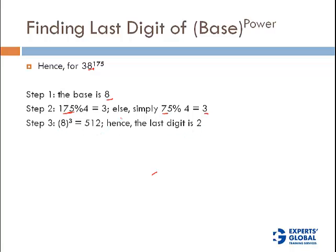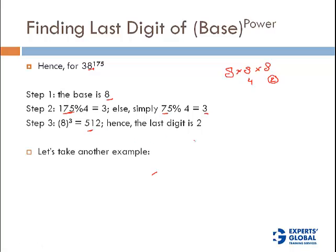You don't have to calculate 8^3 fully. Since 8^3 means 8 × 8 × 8, you can track just the last digits: 8 × 8 gives 64 (last digit 4), and 4 × 8 gives 32 (last digit 2). So the last digit is 2 — you don't actually need to compute 512.